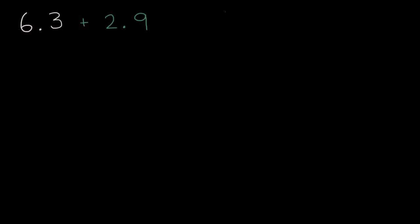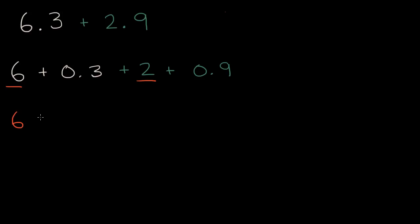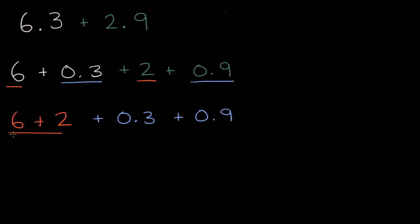Let's do the same thing. This is going to be six and three tenths, so six plus three tenths, plus two, plus nine tenths. Or you could view this as six plus two — putting all the ones together — and then the tenths together: plus three tenths plus nine tenths. The six plus two is pretty straightforward — that is going to be equal to eight.